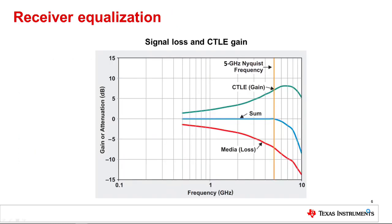Signal loss occurs across a medium — a PCB trace or a cable, for example. The amount of loss increases with length and frequency. A USB redriver receiver uses continuous time linear equalization, also known as CTLE, to compensate for channel insertion loss and inter-symbol interference of the channel into the redriver. The CTLE is a linear filter applied at the receiver that amplifies components around the Nyquist frequency and filters higher frequency components.